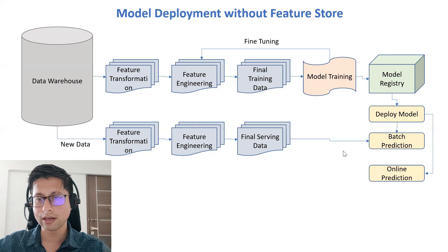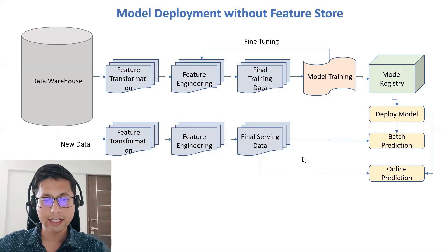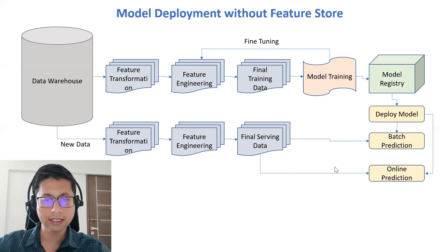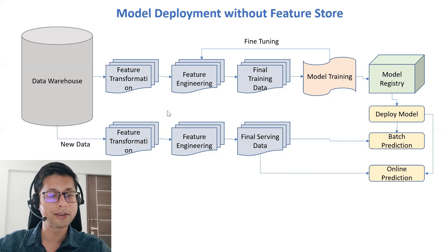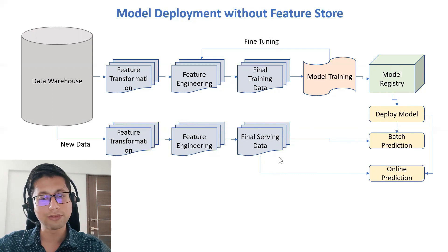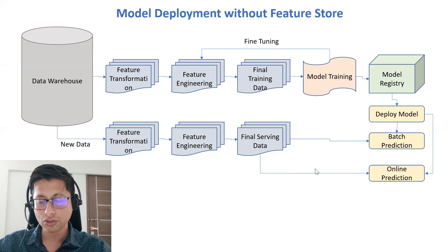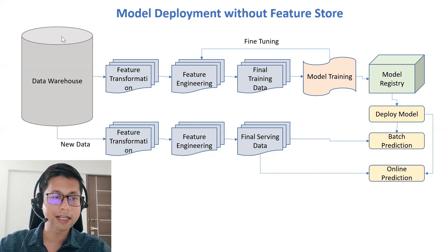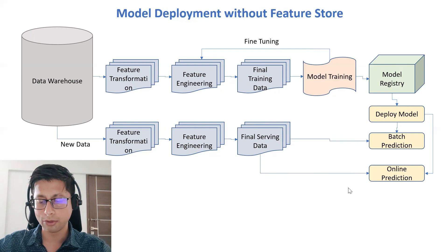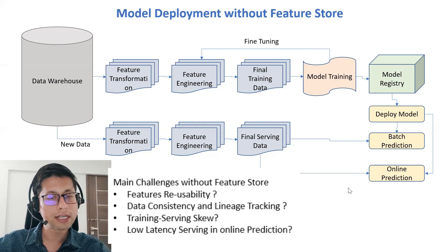The same flow applies for online prediction — we read the deployed model from the model registry. But for online prediction, data is also coming from the warehouse, meaning we need to repeat all those transformation and engineering steps. Those calculations take time, making this approach time-consuming. That's one of the key challenges with this architecture.